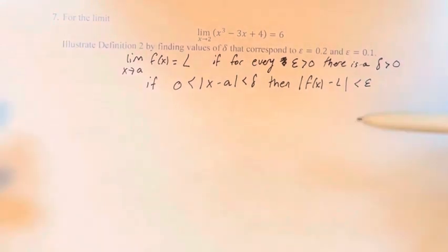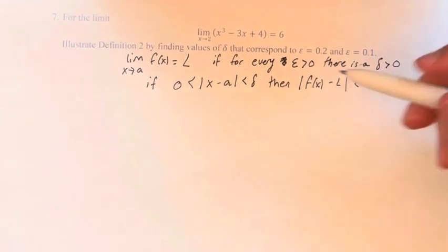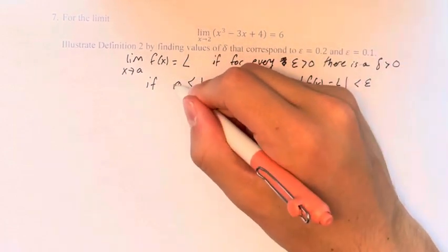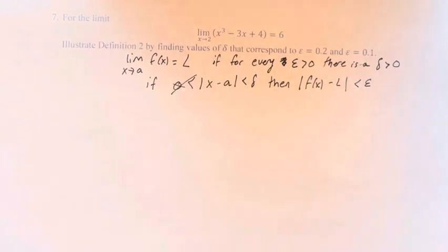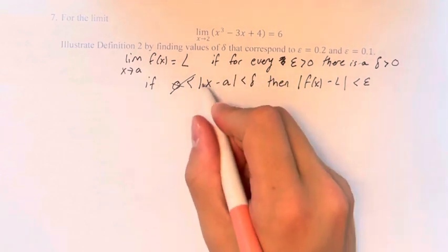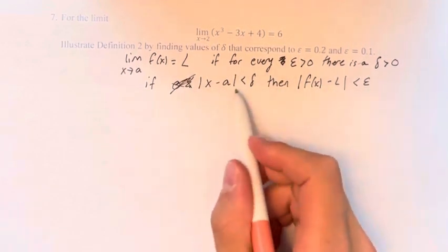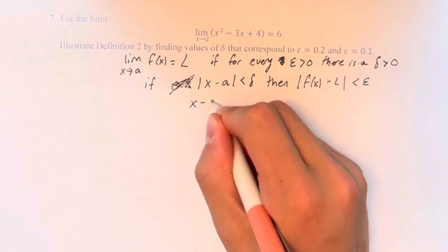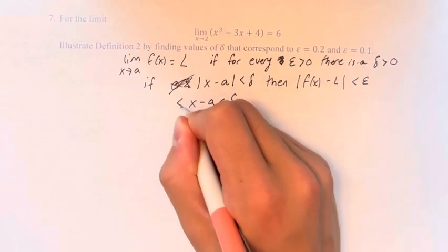So just seeing this straight up might not make any sense, but we're basically saying that if we ignore the 0 for a second, if we say that the absolute value of x minus a is less than delta, then x minus a is less than delta and it's greater than negative delta.